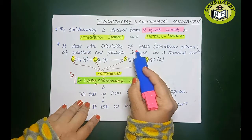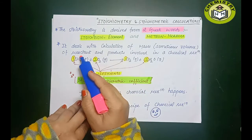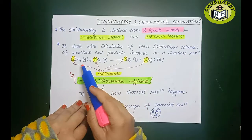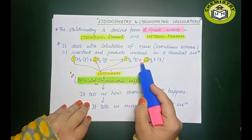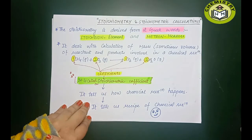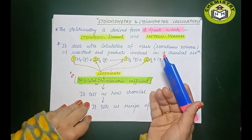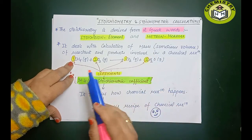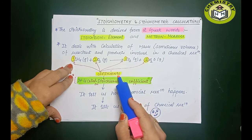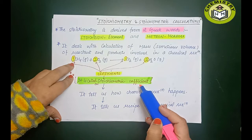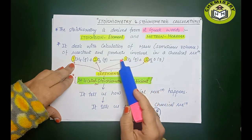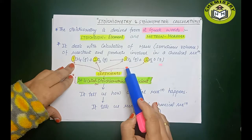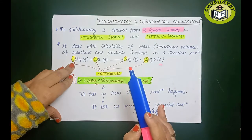Stoichiometry deals with the calculation of mass — and sometimes volume — of reactants and products involved in a chemical reaction. So these numbers I wrote are called coefficients, also known as stoichiometric coefficients. They tell us: why did we write these numbers? We wrote them to balance the chemical reaction. Why did we balance it? So that it follows the law of conservation of mass.